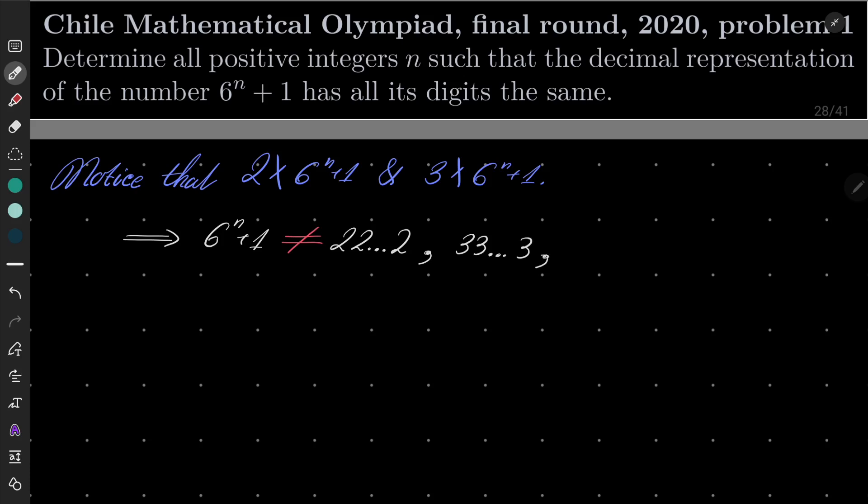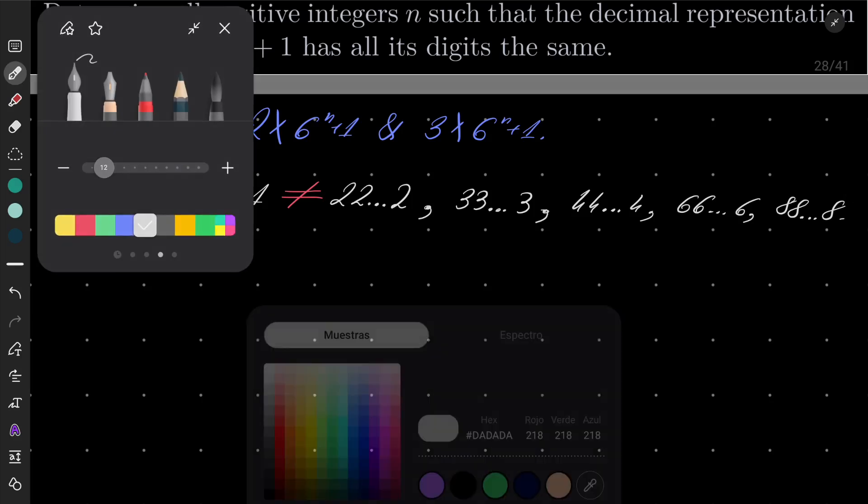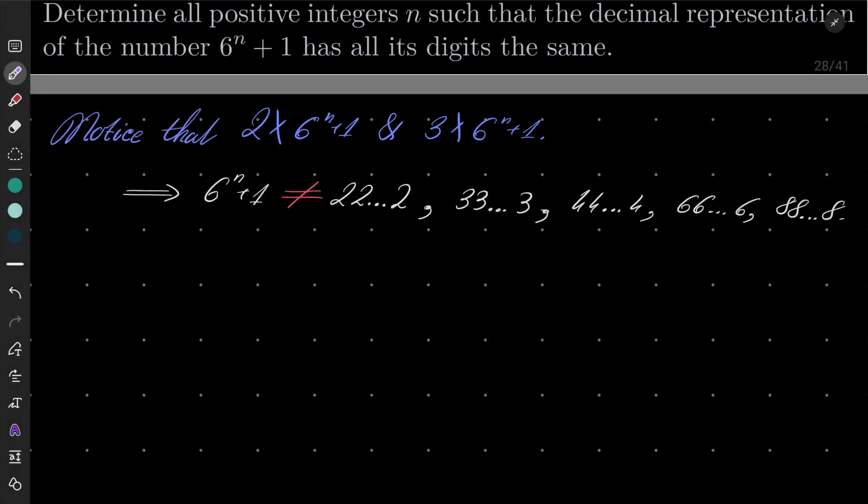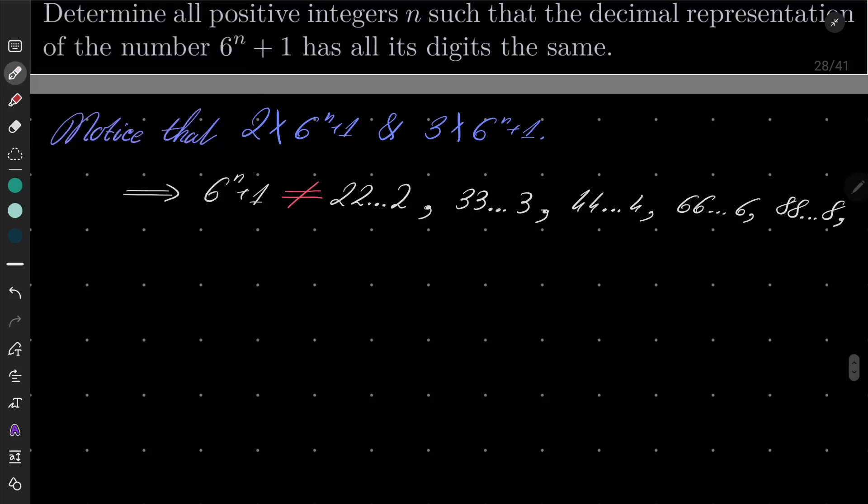cannot have only 4's, cannot have 6's, cannot have 8's. So these numbers are easily dismissed. So let's now consider the remaining cases, namely only 1's, only 5's, and only 7's. Only 9's are also excluded.